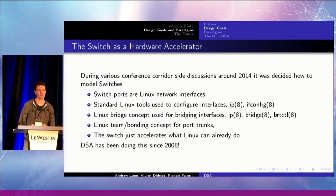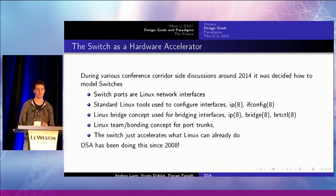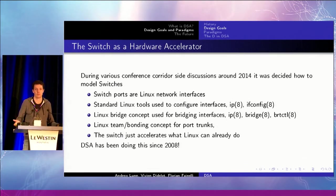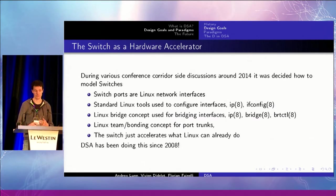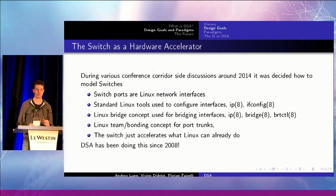During various conferences and side discussions, either on mailing lists or privately, people basically agreed that the most sensible thing to do is that each switch port should be a network device, because it's a great paradigm to work on. Standard Linux tools like ip, ifconfig, will still work because these are network devices. Same thing for bridges. You could extend that to team, bonding, etc. And the switch is basically an accelerator of what Linux can already do in software, so anything that can be offloaded is a good candidate for the switch driver to take care of.